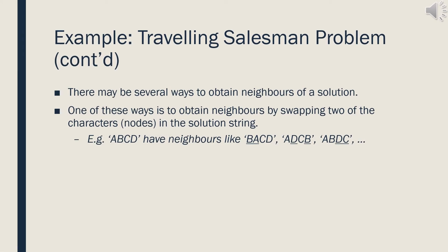There are several ways to obtain neighbors of a solution. One of these ways is to obtain neighbors by swapping two of the characters, or cities, in the solution string. For example, ABCD has neighbors like BACD, ADCB, ABDC, and so on.